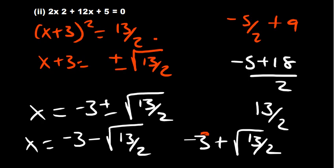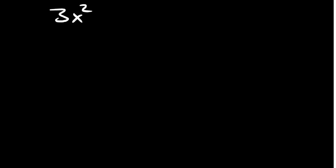That is what the completing the square method is all about. Let's look at one more extra question: 3x squared plus 12x minus 2 equals 0.